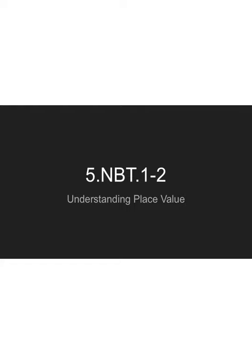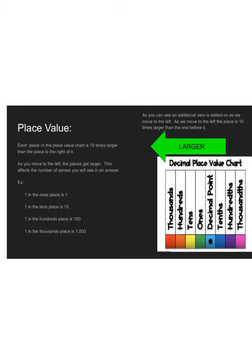Today we're going to be talking about how to understand place value. Each place value in the place value chart is 10 times larger than the place to the right of it. As you move to the left, the places get larger. This affects the number of zeros you will see in your answer.